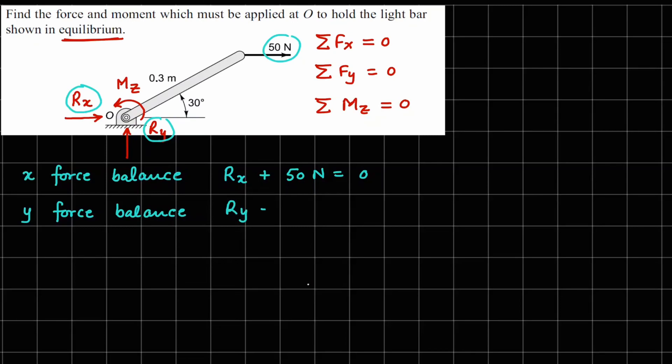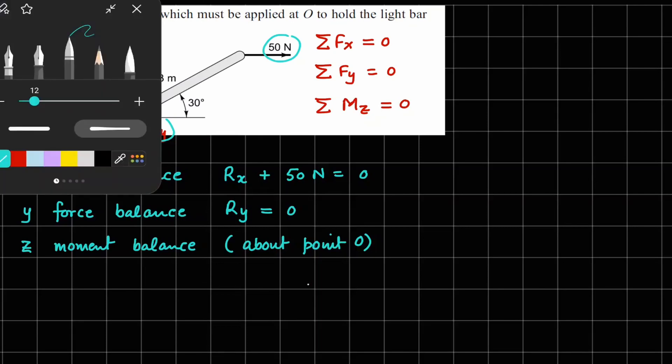So I can write Ry has to be equals to 0. Now then I look for z moment balance. And if you see, for moment balance we need a point about which we are going to take these moments. So in this case we will choose point O because Rx and Ry both pass through that point. That's why Rx and Ry will not give any moment. Now the third force that we have in this problem is your 50 newton force.